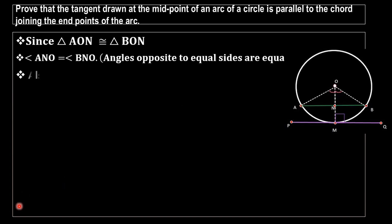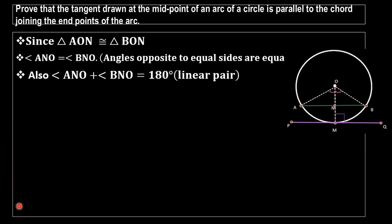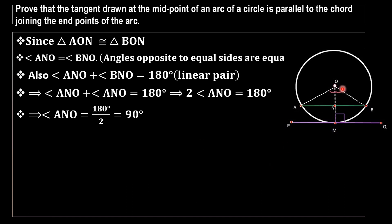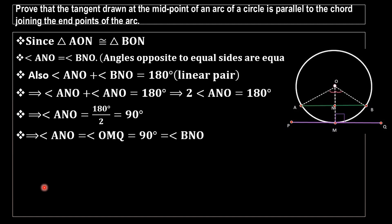Take angle ANO plus angle BNO equals 180 degrees — they form a linear pair. Since angle ANO equals angle BNO, we can write angle ANO plus angle ANO equals 180 degrees, giving 2 times angle ANO equals 180 degrees. Therefore, angle ANO equals 90 degrees.